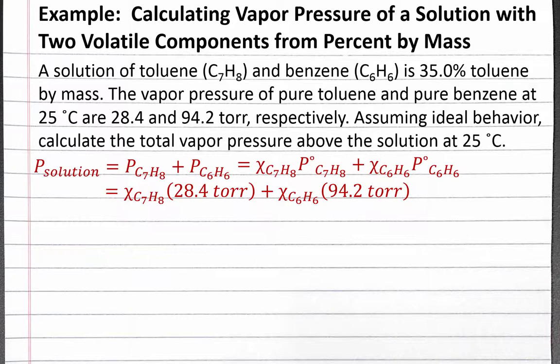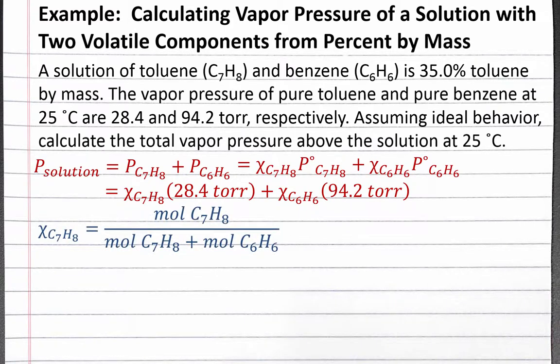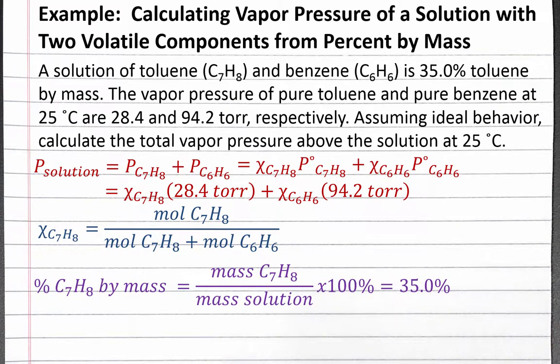We don't know the mole fraction of toluene or benzene. Our equation to calculate the mole fraction of toluene is the moles of toluene divided by the total moles, which would be the moles of toluene plus the moles of benzene. In the problem, we're given that the solution is 35% toluene by mass. Whenever we convert from one concentration unit to another without a given amount of solution, we can assume an amount. We'll assume we have 100 grams of solution.